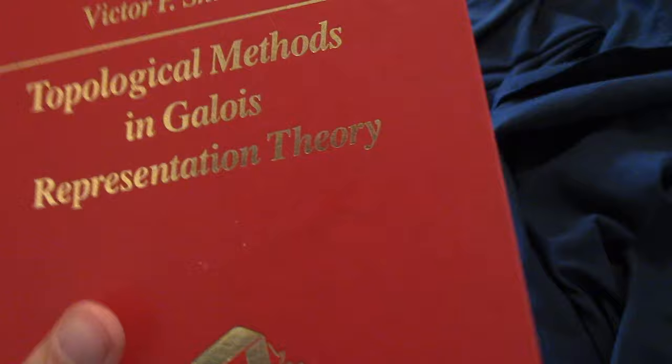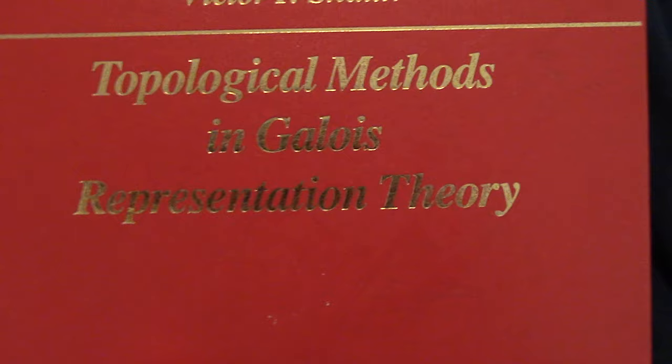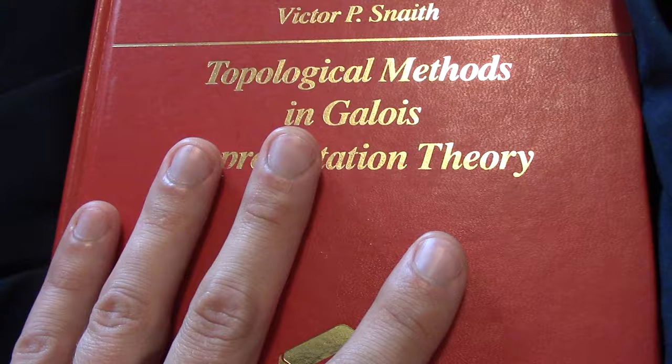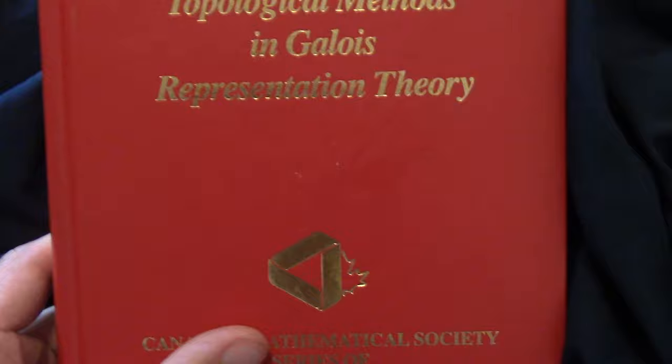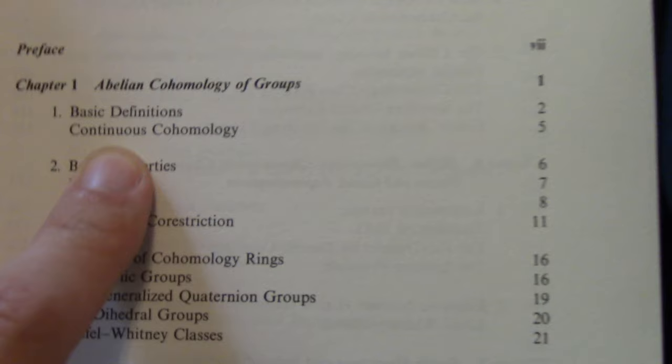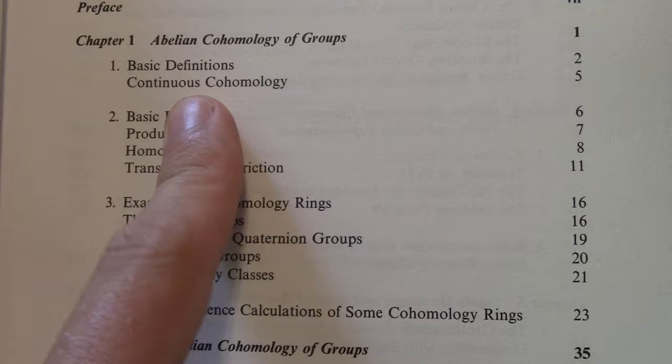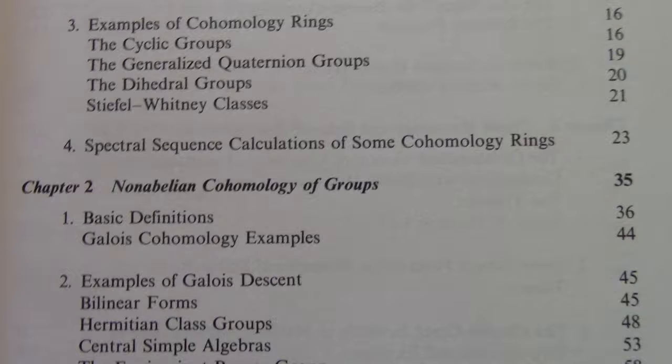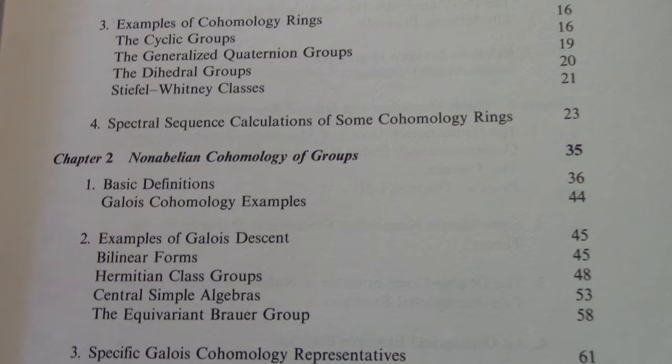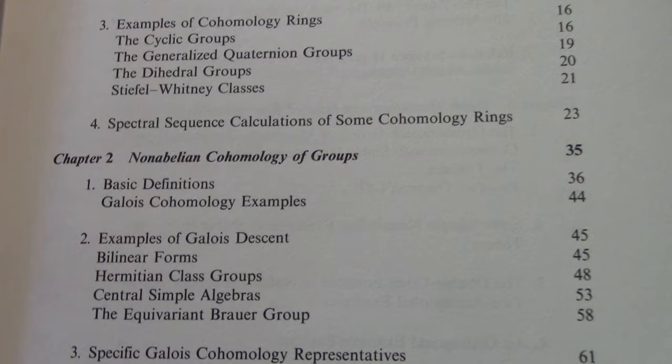Another book that's tangentially related to my research that I should definitely check out in more detail, but I have gone to this a few times to learn and review some basic group cohomology, is this book: Topological Methods in Galois Representation Theory. This was another random find. It's not like this is maybe a popular, well-known book, but I just happened to find it on a shelf one day and it sounded really interesting.